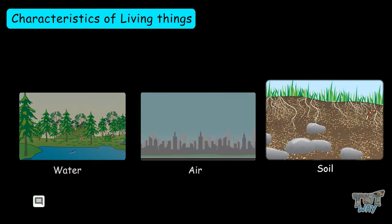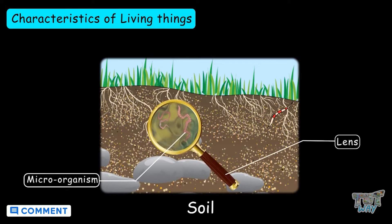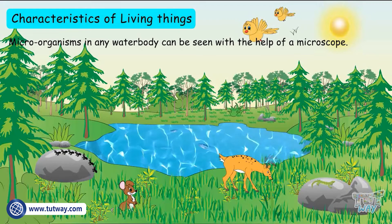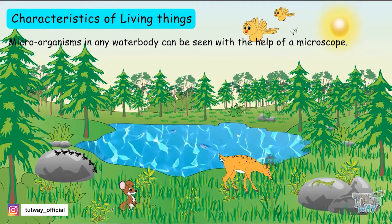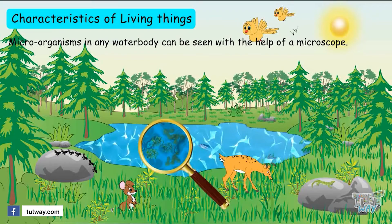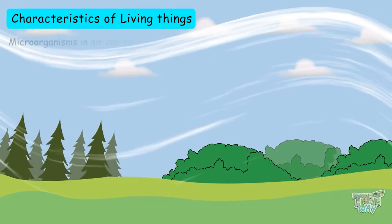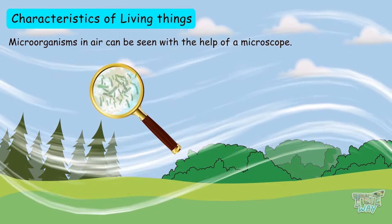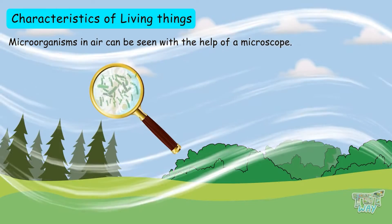For example, take a sample of soil — it has lots of microorganisms that you can't see. Take any sample of water from any water body; it has lots of microorganisms present that you can see with the help of a microscope, not with your naked eye. Even in the air you breathe, there are a lot of microorganisms that you can only see with a microscope.